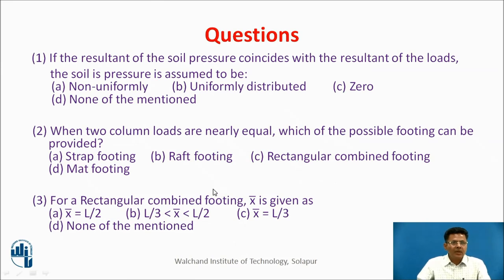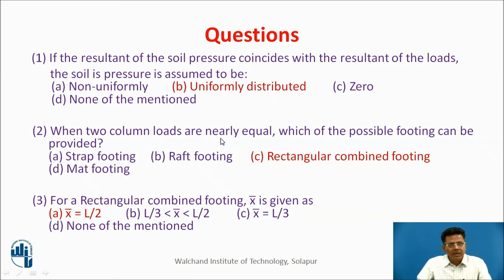Let us take some questions. If the resultant of soil pressure coincides with the resultant of loads, the soil pressure is assumed to be: non-uniform, uniformly distributed, 0, or none of the above? — Naturally, it has to be uniformly distributed. When two column loads are nearly equal, which footing can be provided: strap, raft, rectangular, or mat? — When the loads are nearly equal it has to be a rectangular combined footing. For a rectangular combined footing, x-bar is given by: L/2, L/3 < x-bar < L/2, x-bar = L/3, or none of the above? — The resultant has to pass at L/2.